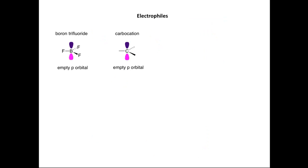Let's now look at electrophiles — compounds that contain empty orbitals. For boron trifluoride, we have six outer electrons on boron and an empty p-orbital readily available for accepting two further electrons. We have a similar situation for a carbocation: six outer electrons on carbon and an empty p-orbital.